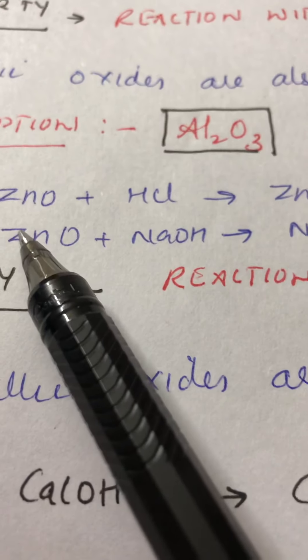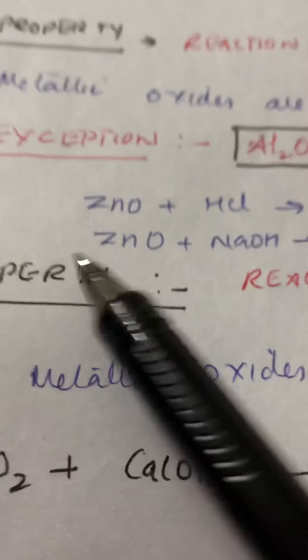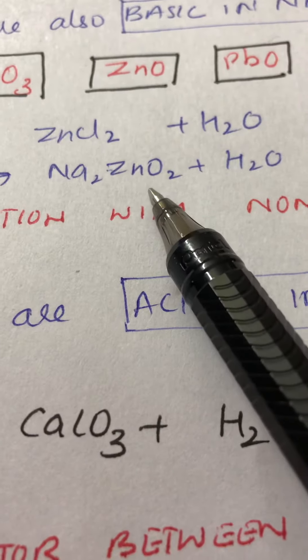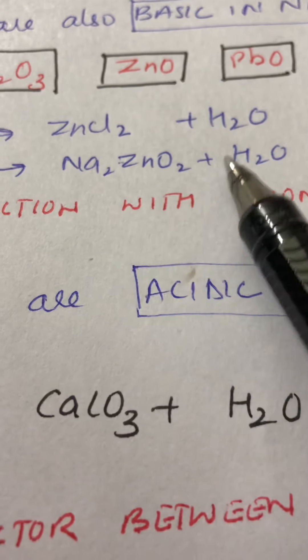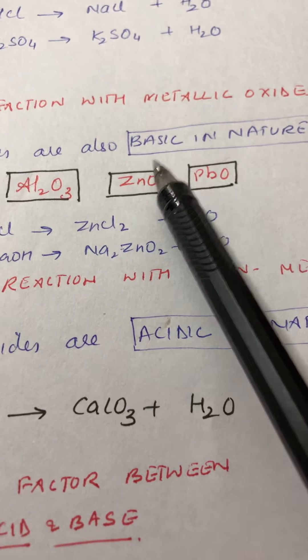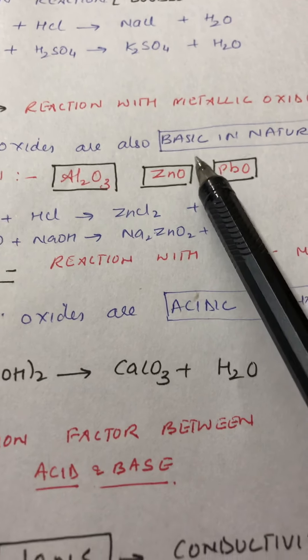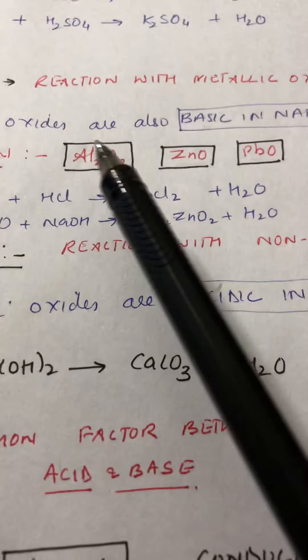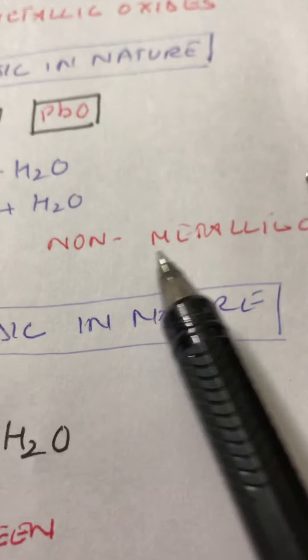Their oxides are also amphoteric — aluminium oxide, zinc oxide, and lead oxide. Metallic oxides react only with acids and do not react with bases, except for these three amphoteric ones. The last property talks about reaction with non-metallic oxides.